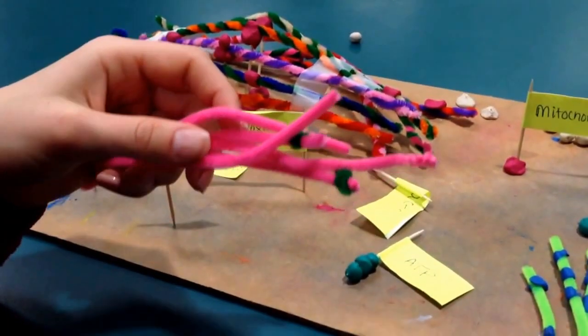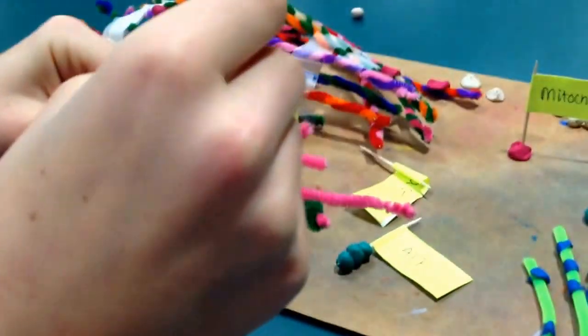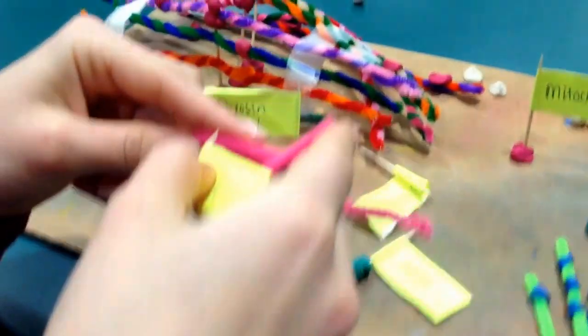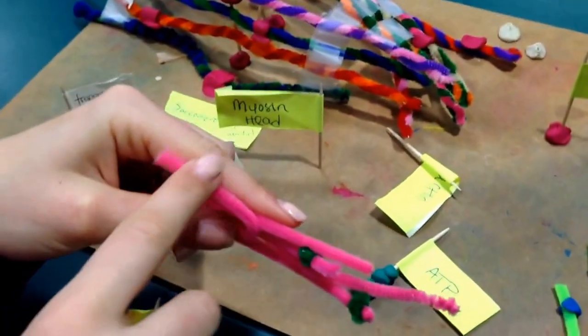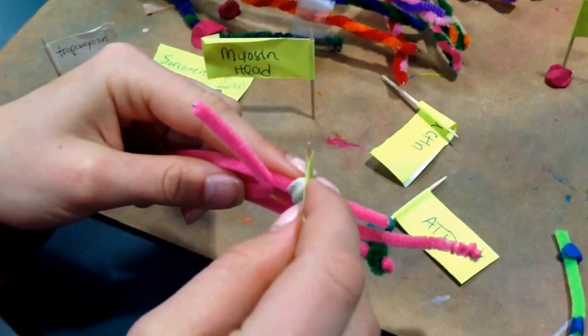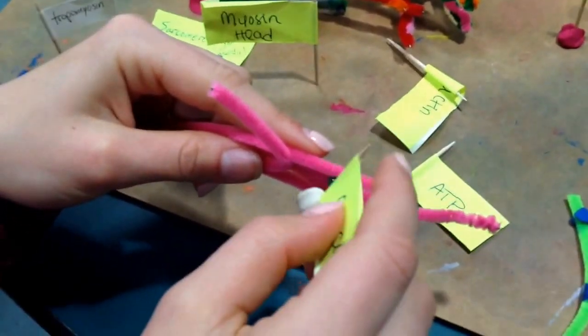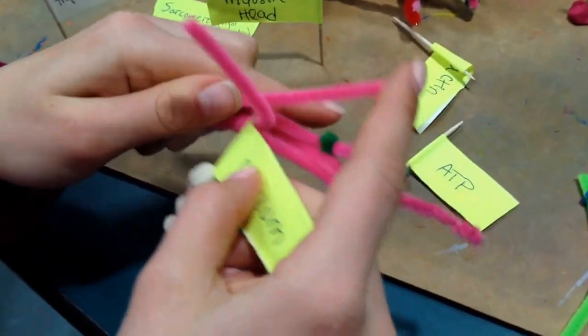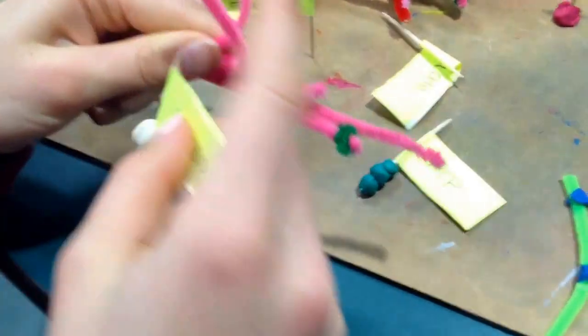When our body decides to move, calcium comes in near the actin filaments, revealing the myosin binding site. Calcium binds to troponin and moves the tropomyosin away from the actin strand, allowing the myosin head to bind to actin and facilitate the actual contraction.